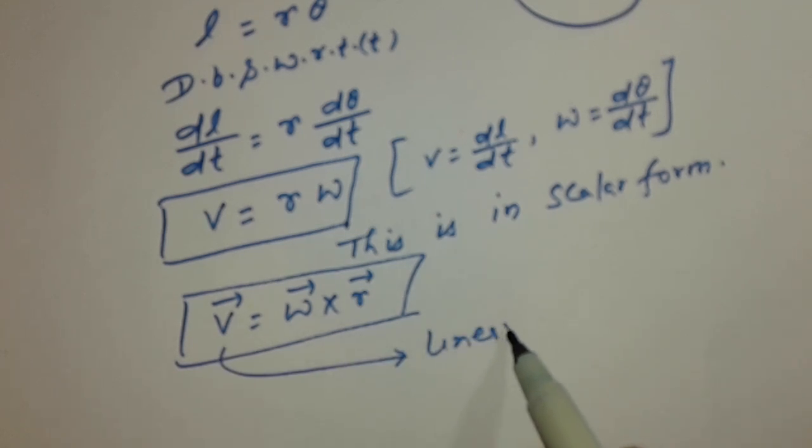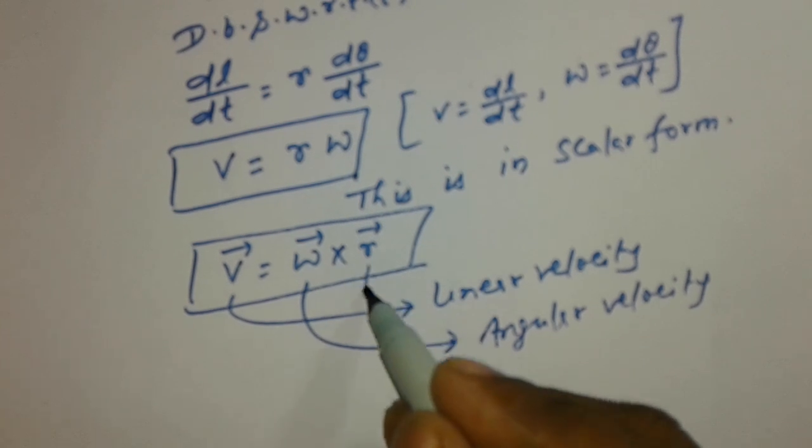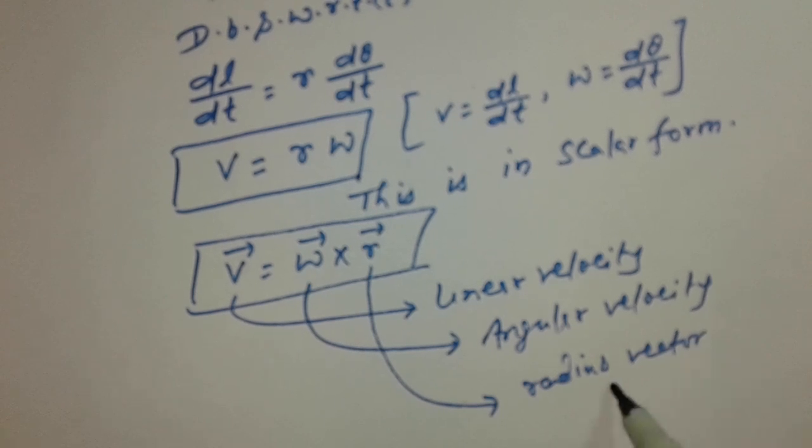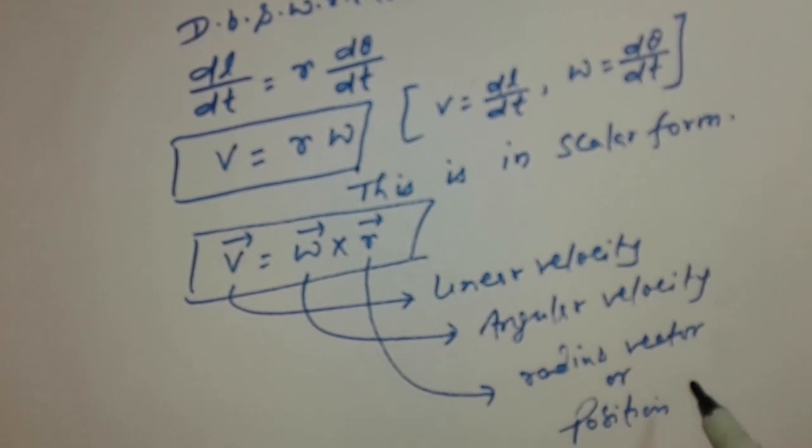Where V is linear velocity, omega is angular velocity, and R is radius vector or position vector.